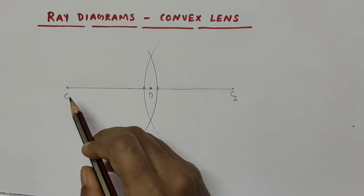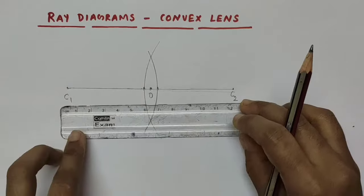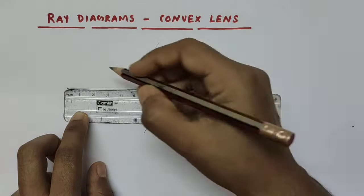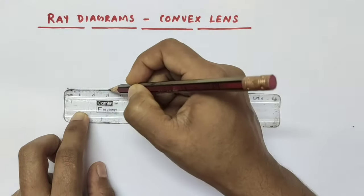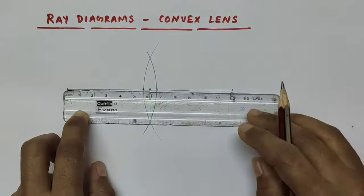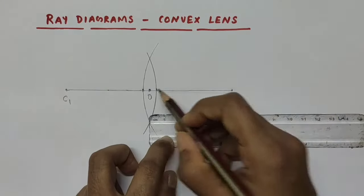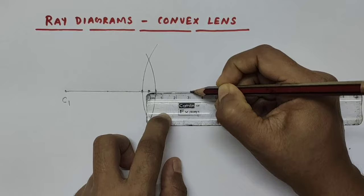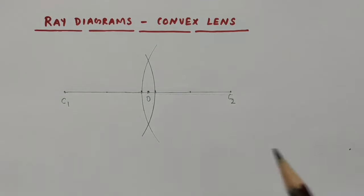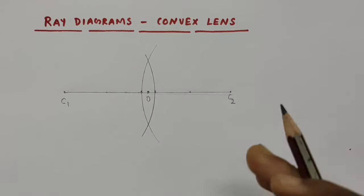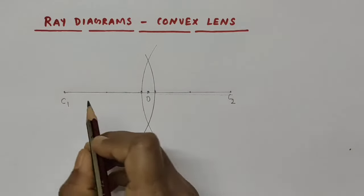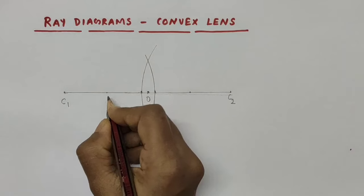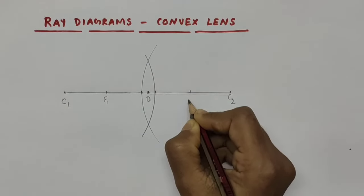Now measure distance C1O — it would be 6 centimeters — then mark its midpoint, that is 3 centimeters from C1. Then measure distance C2O — also 6 centimeters — and mark its midpoint, 3 centimeters from that end. A convex lens has two principal foci, so these two midpoints are the two principal foci. Let this be F1 and let this be F2.